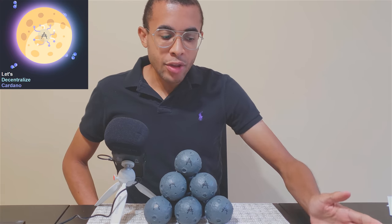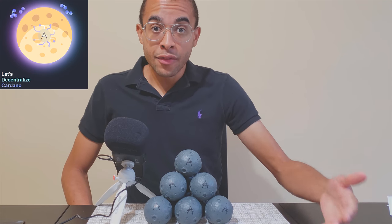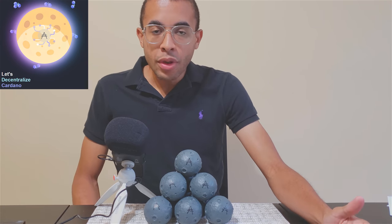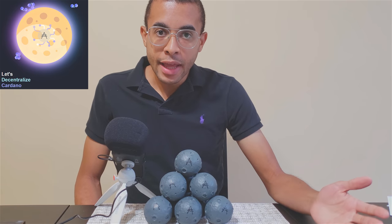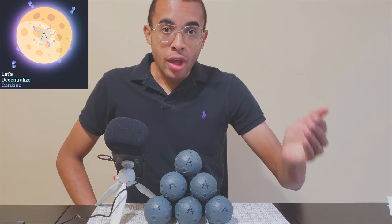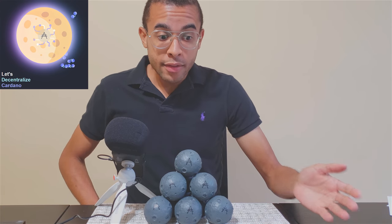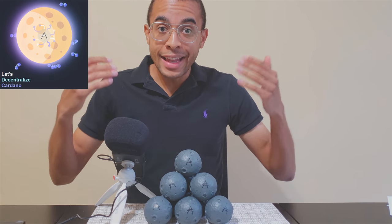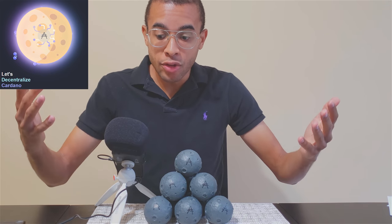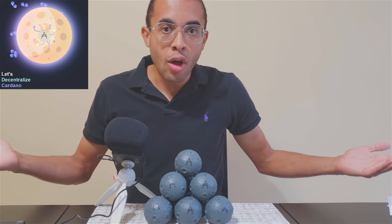In layman's terms, k value is the number of pools and a zero is the influence of the pledge factor. When we move towards the Shelley mainnet, pledge is where the owner or operator of a pool basically puts their money where their mouth is. They pledge their ADA to a pool, which locks up their ADA for however long they want to lock it up.